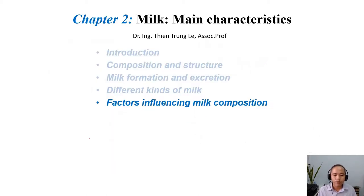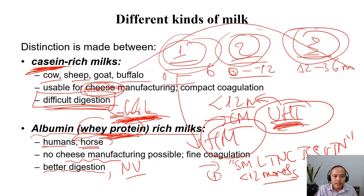Now we are done with part 4. We talk about different kinds of milk. And then, the last part of the chapter, we talk about factors which influence milk composition. But before we go there, I have some questions, and then you need to answer if you can follow.